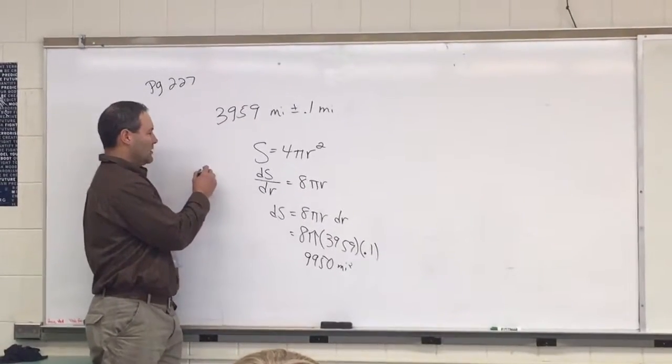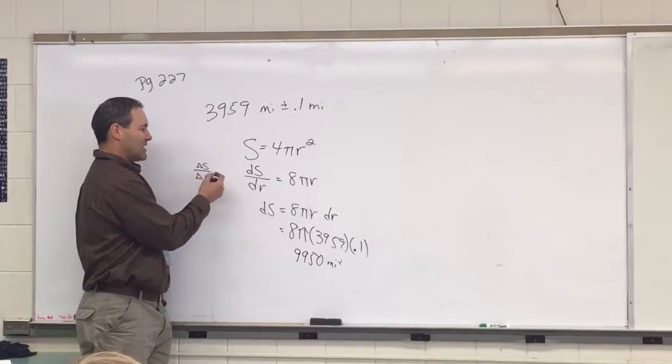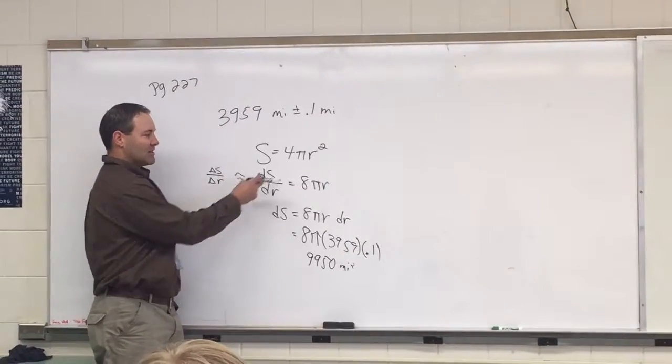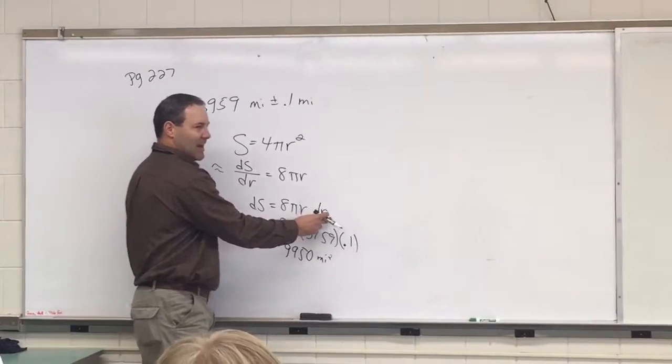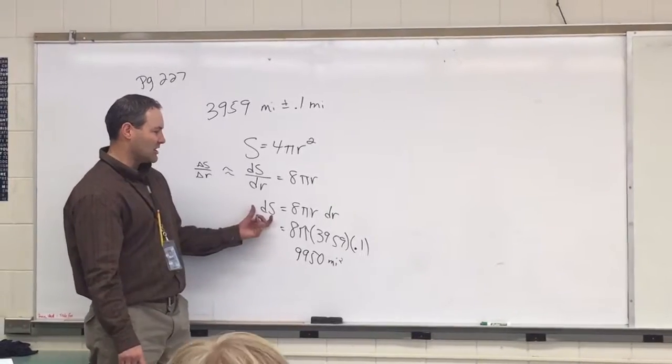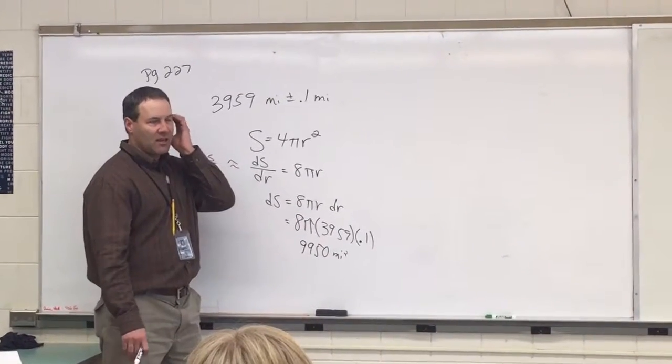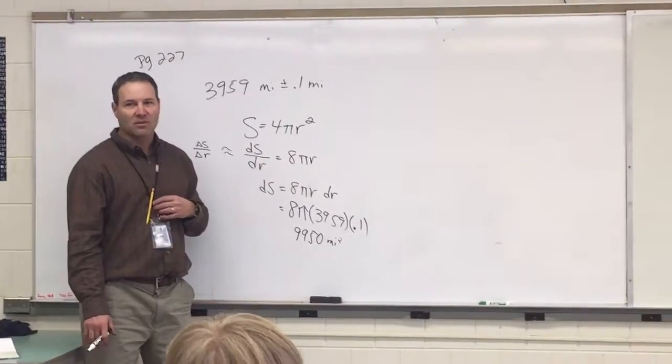The literal would be delta over delta. But in calculus, we say that is an approximation of dS, dr. Okay, so these are called differentials. A dr is a differential. dS is a differential. It's just the change in S, the change in R. Okay? We can do that, right? Find the derivative, plug in what we know. Pretty easy.